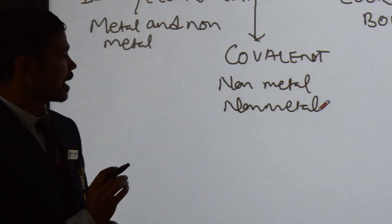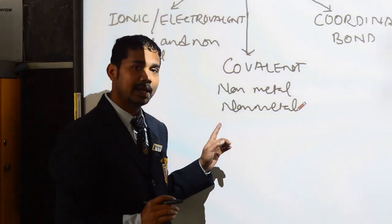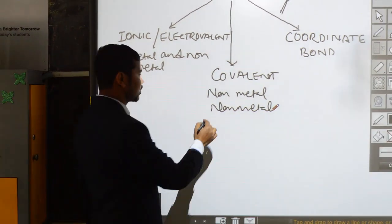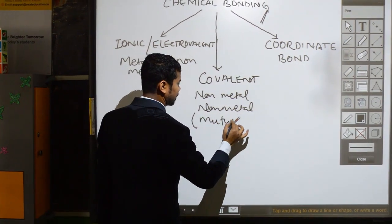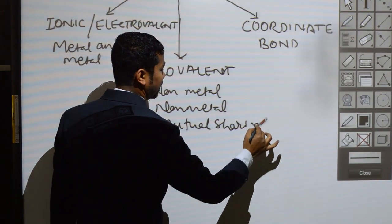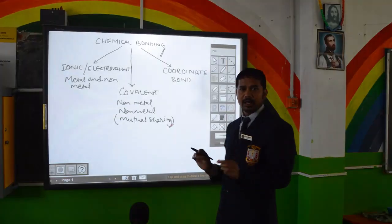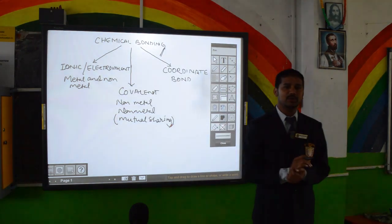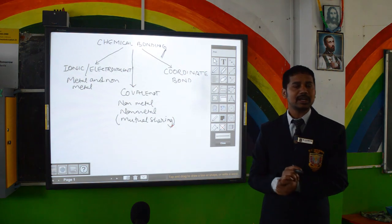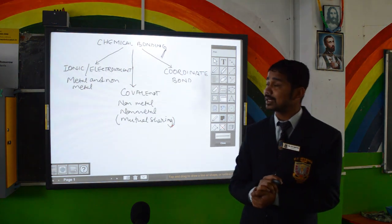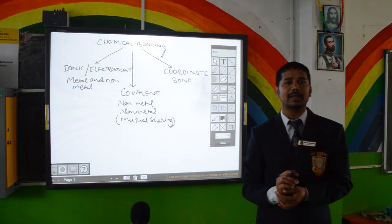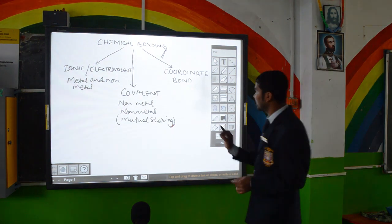Both nonmetals cannot lose electrons; they both have the tendency to gain electrons, so they complete their stable electronic configuration by mutually sharing a pair of electrons. Now, the coordinate bond is the bond formed between two atoms by sharing a pair of electrons provided entirely by one of the combining atoms but shared by both.